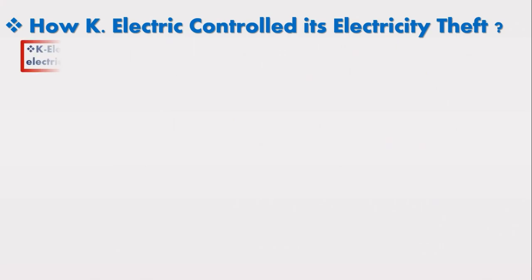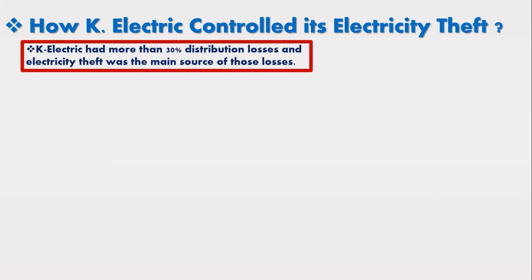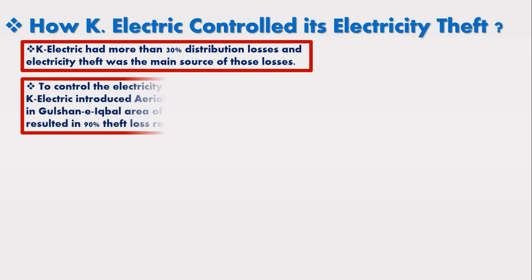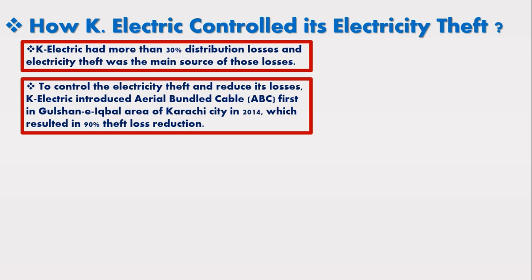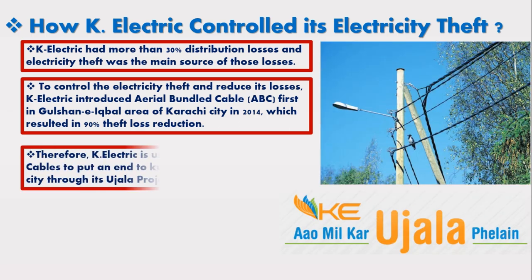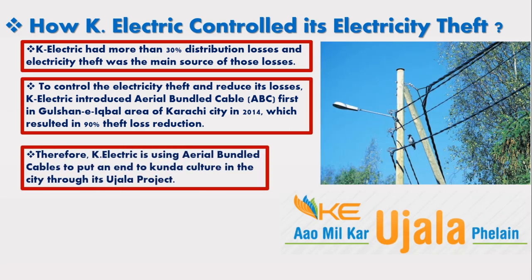Once upon a time, K-Electric had more than 30% distribution losses, and electricity theft was the main source of those losses. To control the electricity theft and reduce its losses, K-Electric introduced aerial bundled cable first in the Gulshan Iqbal area of Karachi city in 2014, which resulted in 90% theft loss reduction. Therefore, K-Electric is using aerial bundled cable to put an end to kunda culture in the city through its Ujala project.